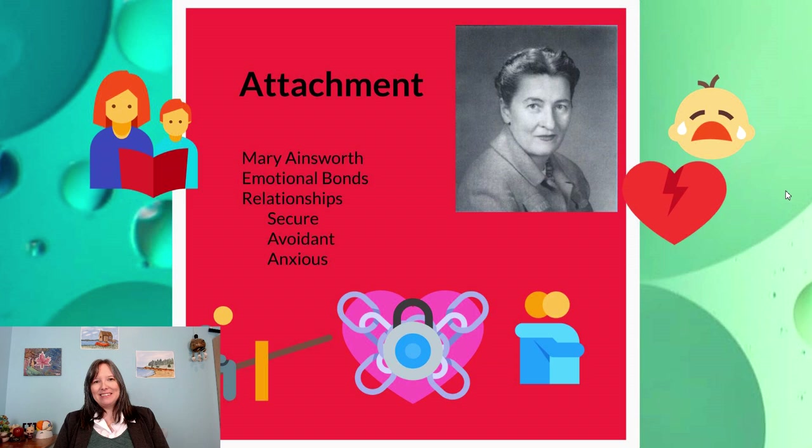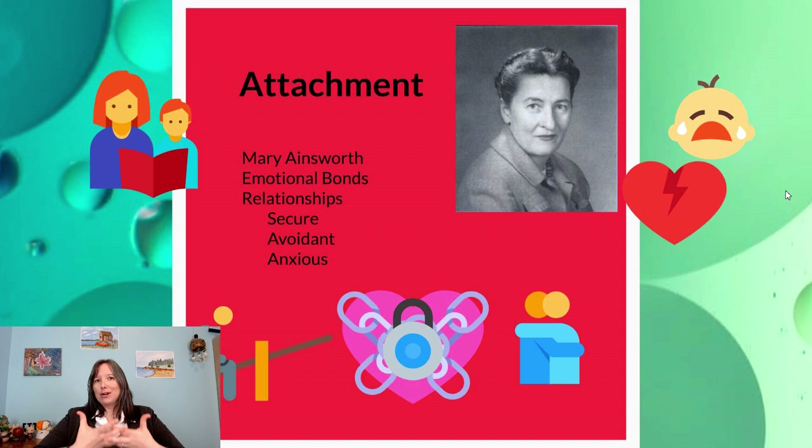Theory number six is Mary Ainsworth's theory of attachment — the idea that how we bond emotionally in relationships can vary significantly. She identified three main types of attachment, with a fourth sometimes discussed as well: secure attachment, where people are very trusting in relationships; avoidant attachment; and anxious attachment. We'll describe these in more detail as we go.